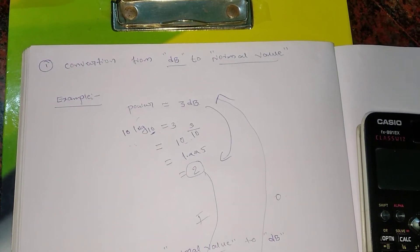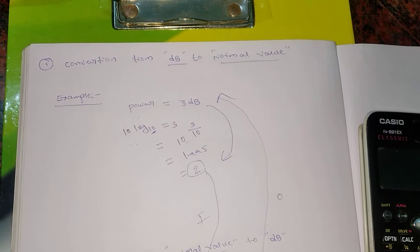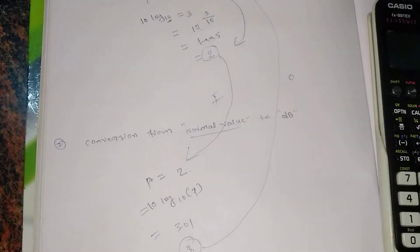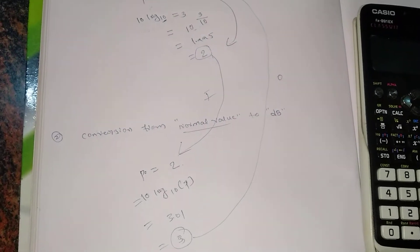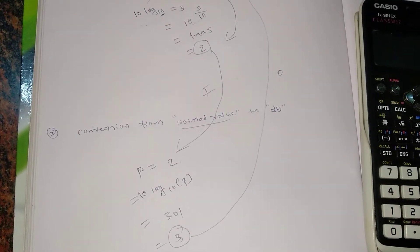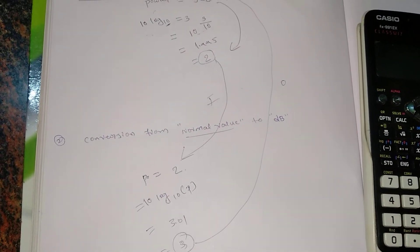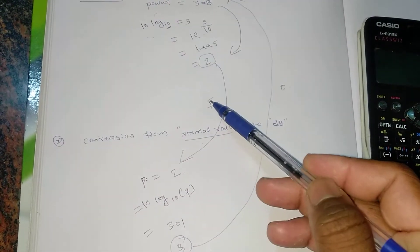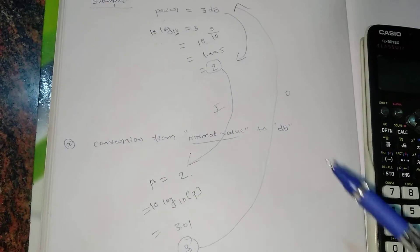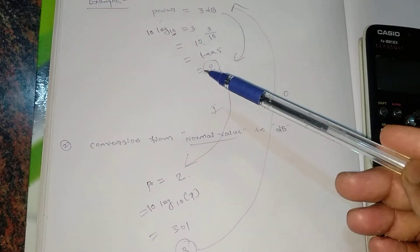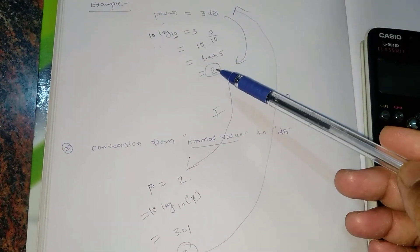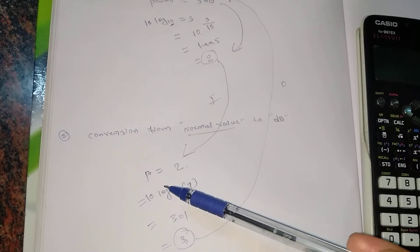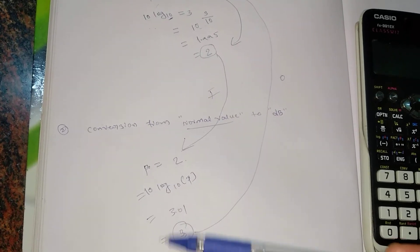So when 3 dB is converted to the normal scale, it will become 2. That's about the first method. Now coming to the second one, which will be the reverse - conversion from normal value to the dB value. This is taken as input again - I know 3 dB will be equal to 2, and now I want to convert 2 to 3 again.